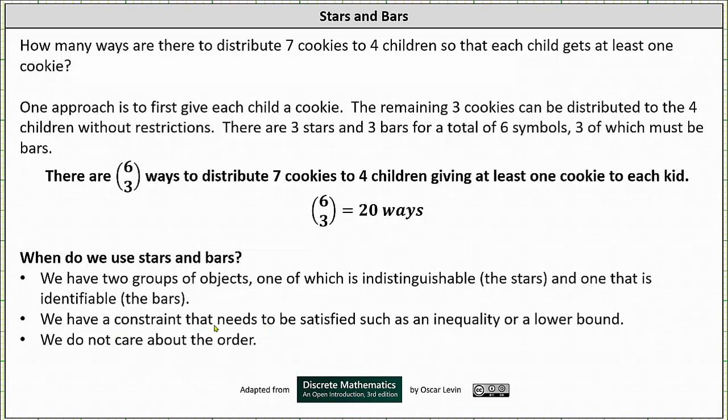We have a constraint that needs to be satisfied such as an inequality or a lower bound, which we saw in the equation example as well as the second example with the cookies where each child gets at least one cookie. And then finally we do not care about the order. I hope you found this helpful.